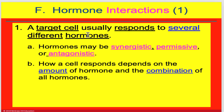Most cells in the body have receptors for multiple hormone types at any one moment in time, and these can change as time passes — as cells become mature or during different times of the day. Based on that, hormones may have an effect on a cell that is synergistic, permissive, or antagonistic, and we need to learn these three terms, which we'll cover in the next few slides.